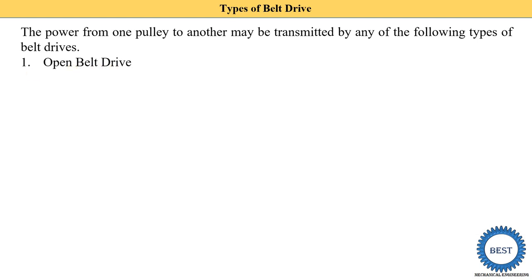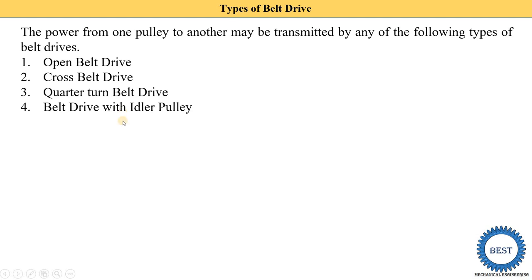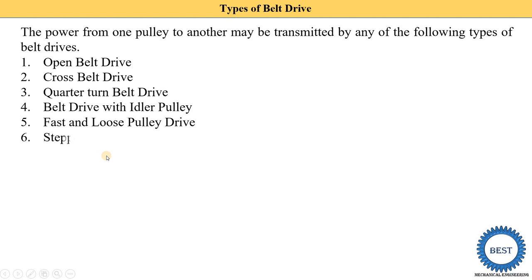We study a total of seven types of belt drive. First is open belt drive, second is cross belt drive, third is quarter turn belt drive, fourth is belt drive with idler pulley — meaning in an open belt drive one extra pulley called the idler pulley is provided. Fifth is fast and loose pulley, sixth is the step or cone pulley drive, and seventh is compound belt drive.